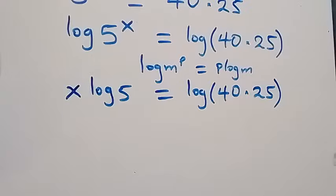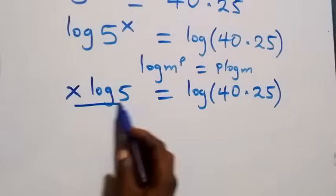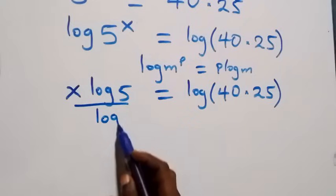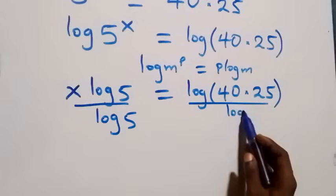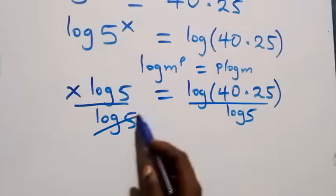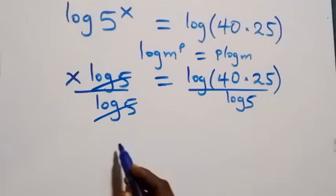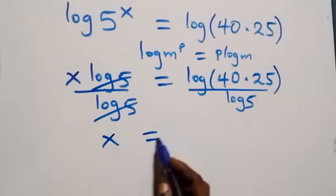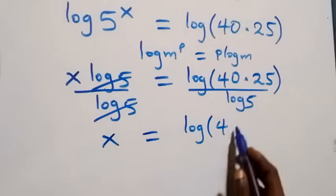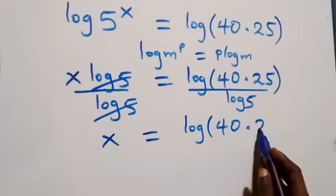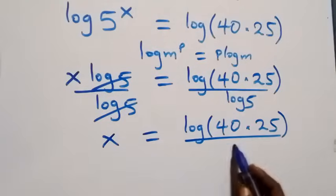The next step, we divide both sides by log 5. Log 5 cancels on the left side and we have x equals log of 40 times 25 over log 5.